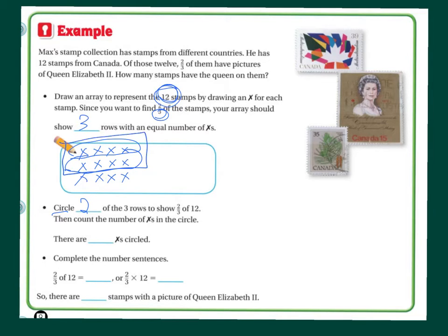I'm going to circle both of those rows. How many X's are in the circle? Let's find out: one through eight. The answer is eight X's circled. Complete the number sentence: two-thirds of 12 is eight, or two-thirds times 12 is eight. So, there are eight stamps with a picture of Queen Elizabeth II.